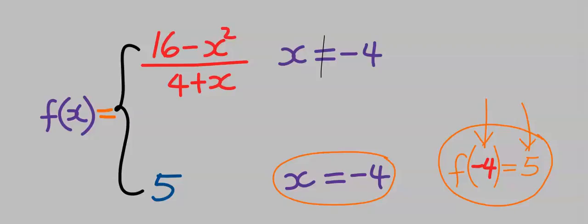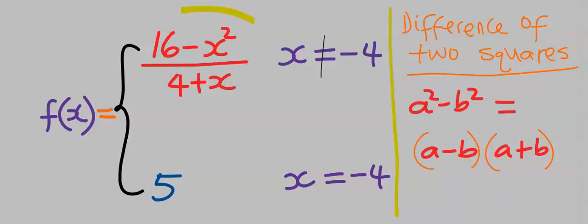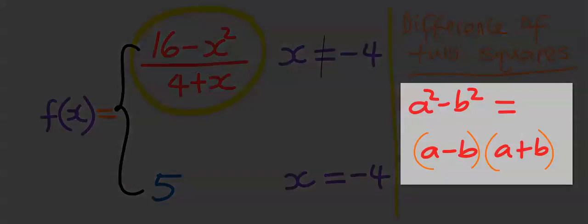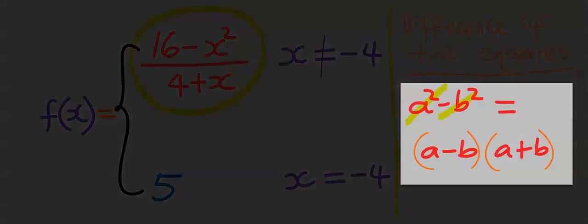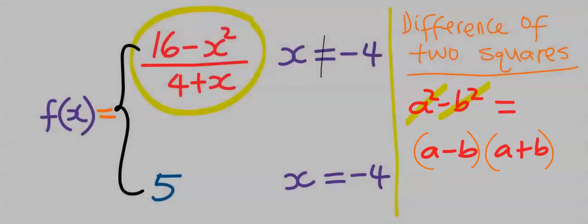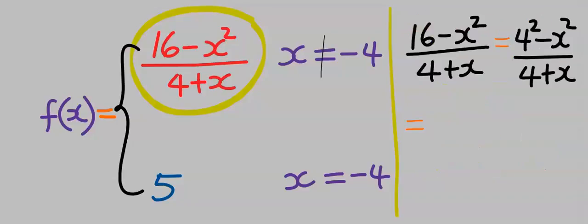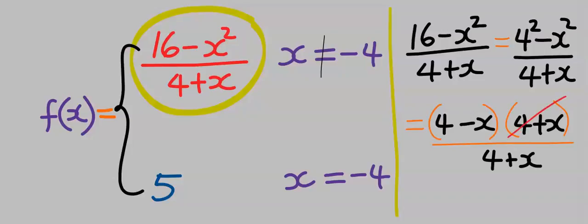Let's solve the left-hand limit using difference of two squares. a squared minus b squared is equal to a minus b in bracket, a plus b in bracket. Applying difference of two squares, we can factor the expression, and we are left with 4 minus x.